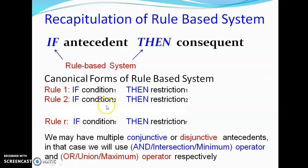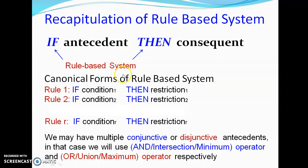All these antecedents can be combined using either a conjunction method or a disjunction method. We can have multiple conjunctive or disjunctive antecedents to form a particular consequent. We are familiar with fuzzy operators: the AND operator (also called intersection or minimum operator) and the OR operator (also called union or maximum operator). These operators help combine canonical rules to obtain a particular consequent.